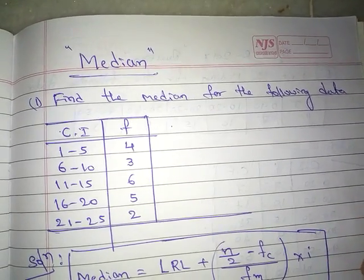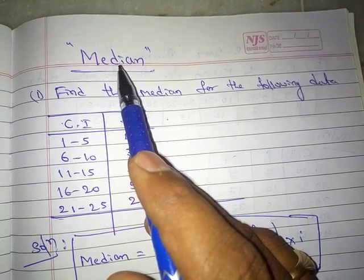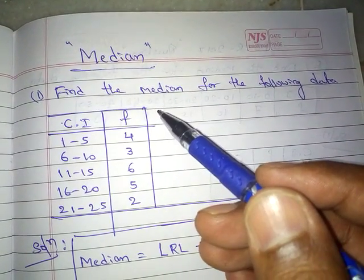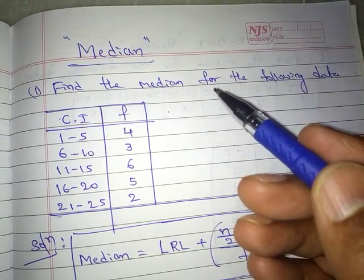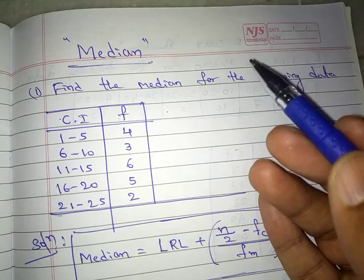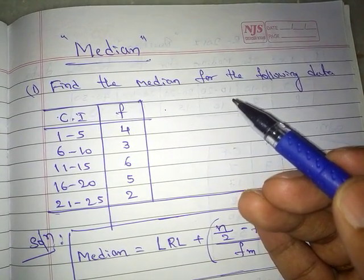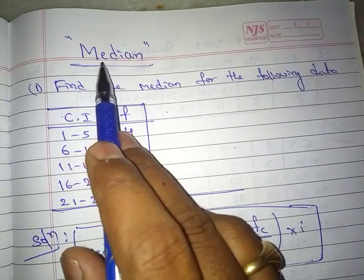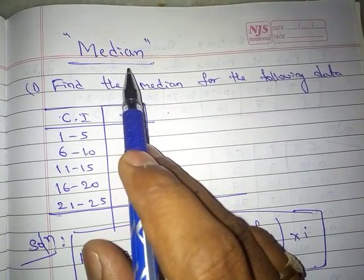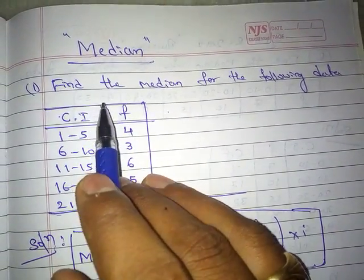Hello friends, today I am going to discuss about median. Before going to discuss about median, we need to understand what is meant by central tendency. Central tendency has three concepts: mean, median, and mode. We will discuss those in detail later. In this class, we are going to find the median in grouped data, which is a very important topic.